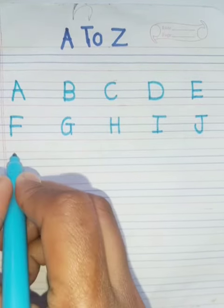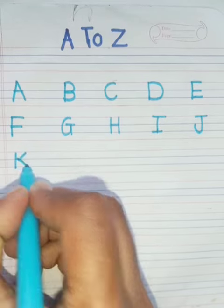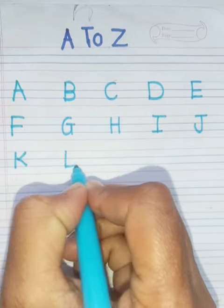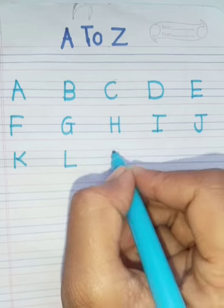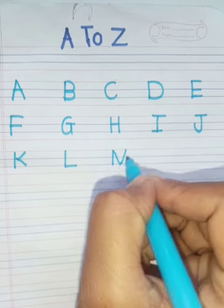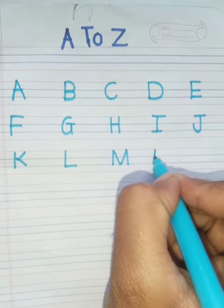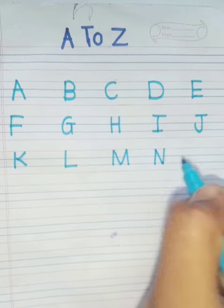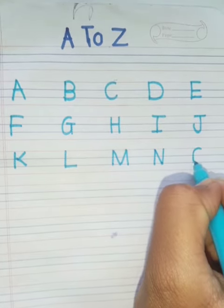K, K for kite. L, L for lemon. M, M for mango. N, N for nest. O, O for orange.